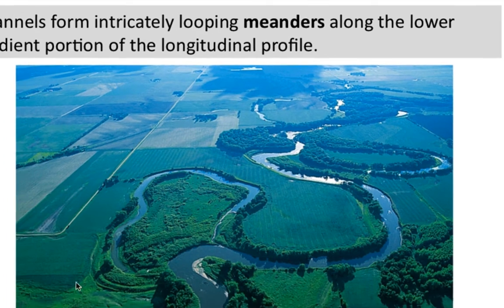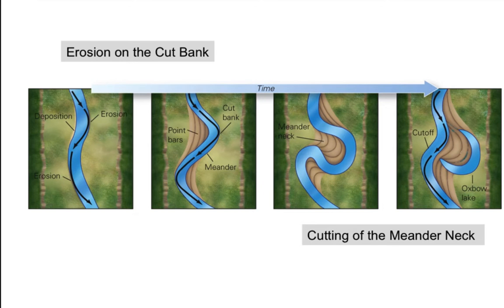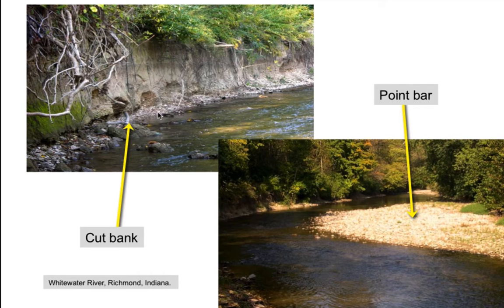Looking back at our picture, here's a good example: the stream used to flow all the way around here, but now it's cut through because two cut banks joined into a meander cutoff. This shows the evolution of this meander cutoff — cut banks are usually steep with active erosion, while here's a point bar.